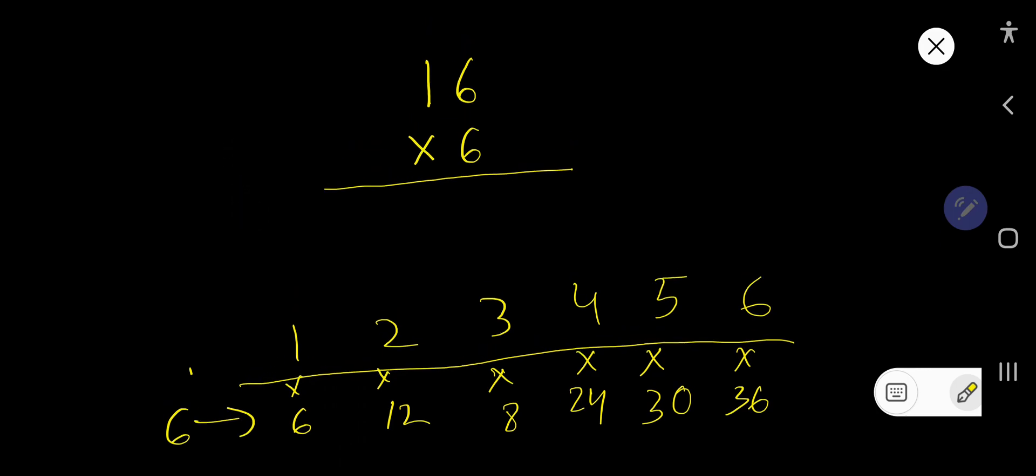So 6 times 6 equal to 36. So put here 6, carry here 3. 6 times 1 equal to 6, plus 3, that is 9. 96 is the answer.